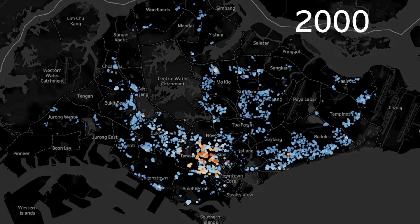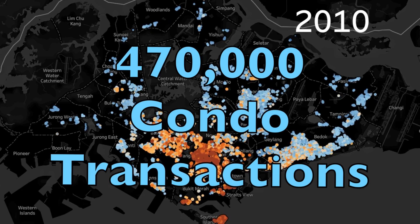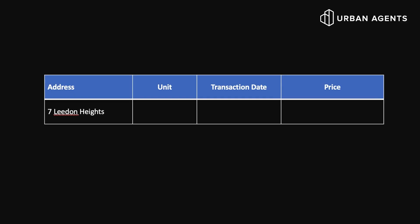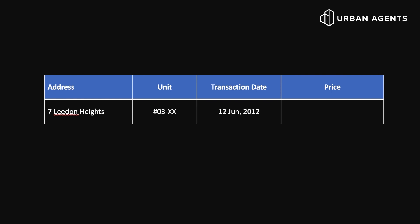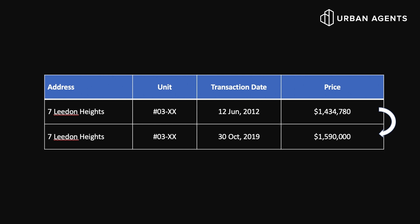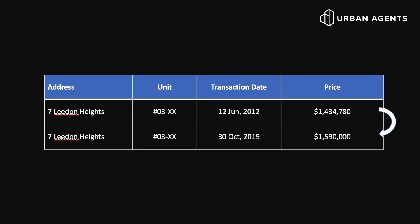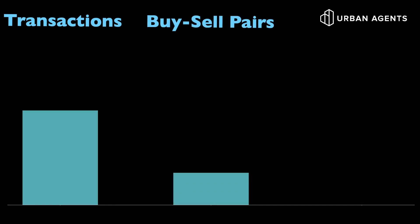Now that we have the basic math covered, let's look at the actual data used in this study. We looked at every single condo transaction since 1995 — about 470,000 of them — and from there identified what we call a buy-sell pair. For example, a unit at Deliden had a transaction record on 12th June 2012 at $1.4 million, followed by another on 30th October 2019 at $1.59 million. That's a buy-sell pair. Across all records, we found 160,000 such pairs.